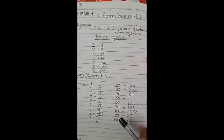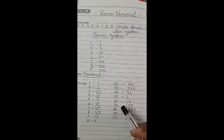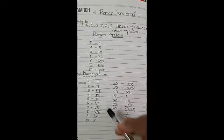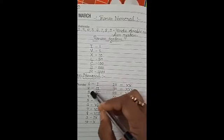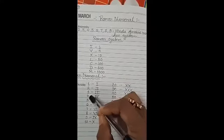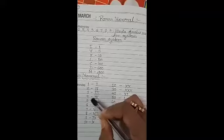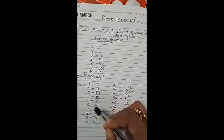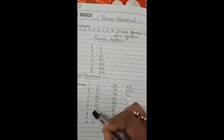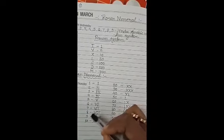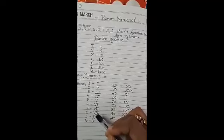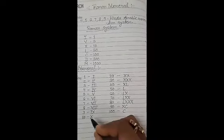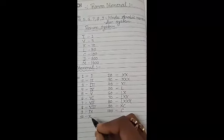Let's write the Roman numeral 1 to 100. 1 is I, 2 is II, 3 is III, 4 is IV, 5 is V, 6 is VI, 7 is VII, 8 is VIII, and 10 is X.